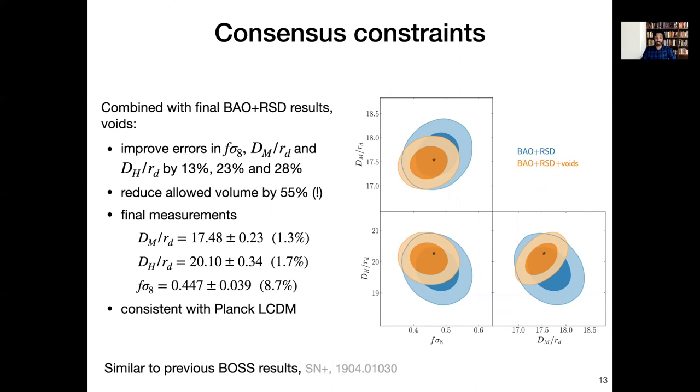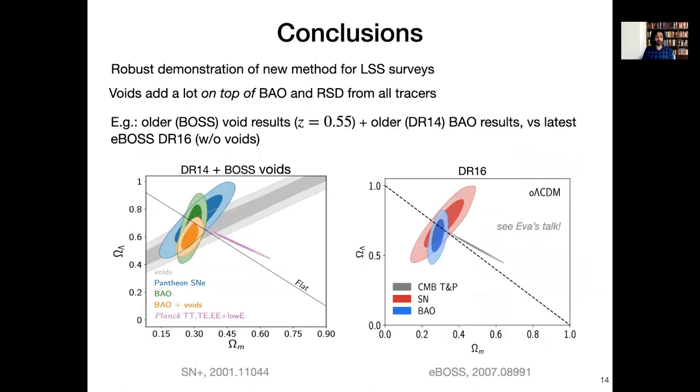Now how much does this actually add to our knowledge of cosmology? These void results are not included in the final eBOSS cosmology paper, but we can go back to a slightly earlier paper where I used only the BOSS, older BOSS void analysis and older DR14 BAO data from multiple tracers over multiple redshifts. And that plot here on the left hand side, these are constraints on dark energy in an open universe on the left hand side. BAO plus voids is the orange contour and then the right hand side panel is the same one that you saw in Eva's talk. And so you compare orange to blue and you can see that just adding voids is equivalent to a lot of information gained from DR14 to DR16. So this is going to be a method that is very useful for all future large scale structure surveys. Thank you.